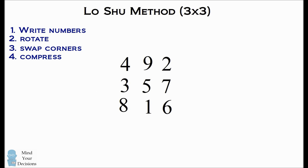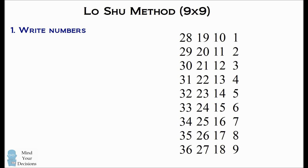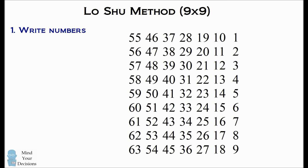So we can use this technique to build a 9 by 9 square. How do we do that? The first step is to write the numbers 1 to 81. In each column we're going to write 9 numbers in increasing order.